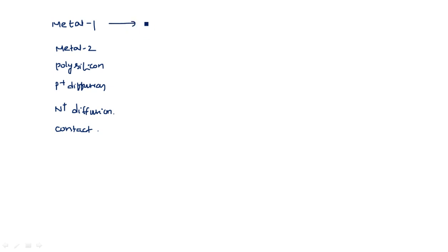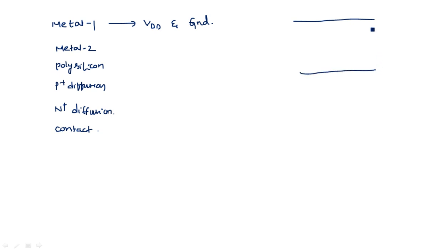Metal is for VDD and ground. Suppose you are asked to draw a stick diagram for a CMOS inverter — you simply use metal lines above and below, giving VDD here and VSS here. There should definitely be a reason for taking only metal for the power supply rails.